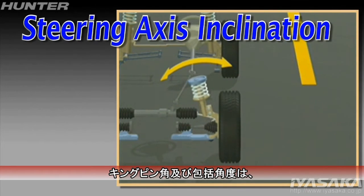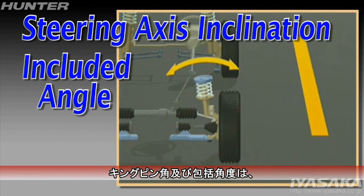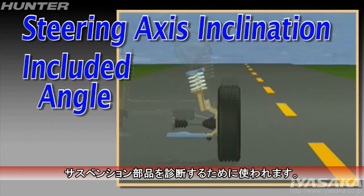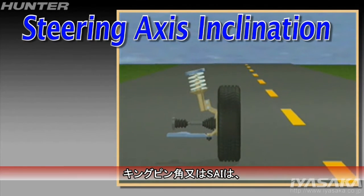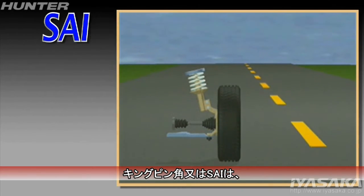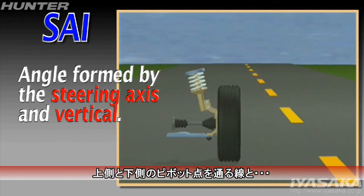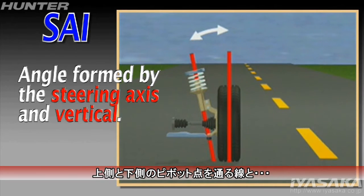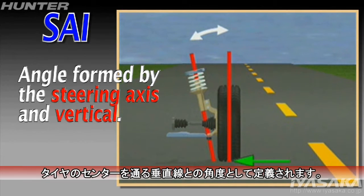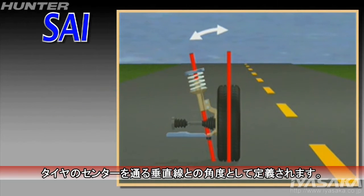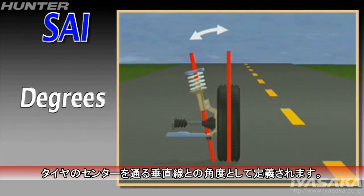Steering axis inclination and included angle are often used as diagnostic tools. Steering axis inclination, or SAI, is defined as the angle formed by a line drawn through the upper and lower pivot points and a vertical line from the center base of the tire when viewed from the front. SAI is measured in degrees.